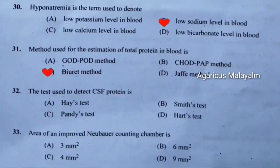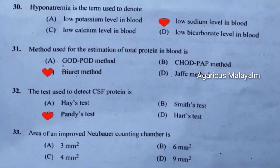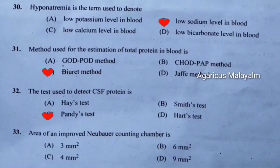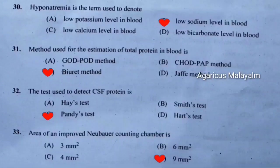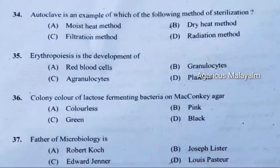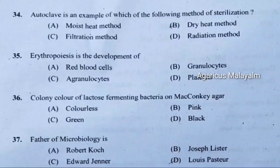Thirty-second question: The test used to detect CSF protein is. Correct answer — Pandy's test. Thirty-third question: Area of an improved Neubauer counting chamber is. Correct answer is option D — 9 mm square. Thirty-fourth question: Autoclave is an example of which of the following method of sterilization. Correct answer is option A — moist heat method.